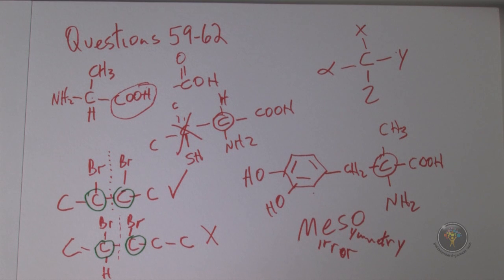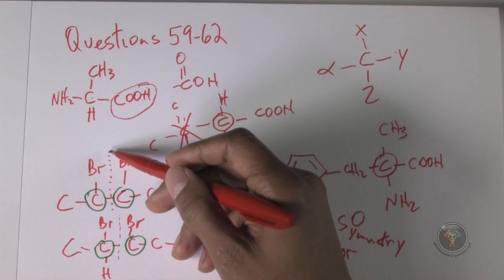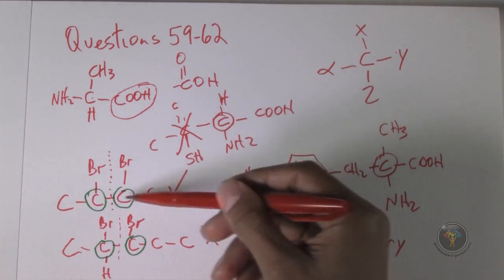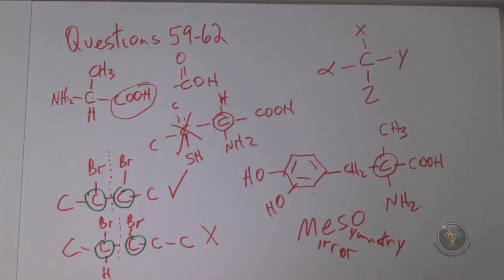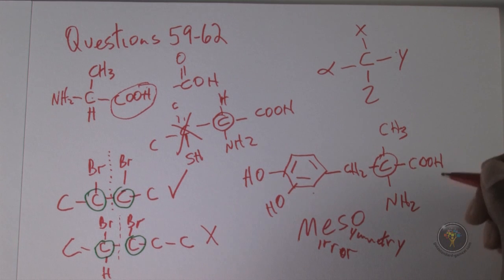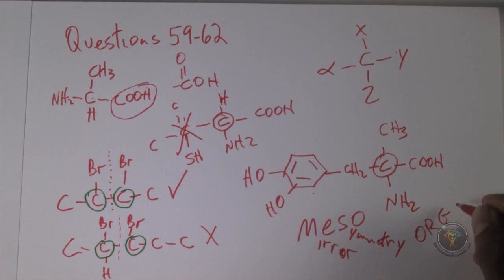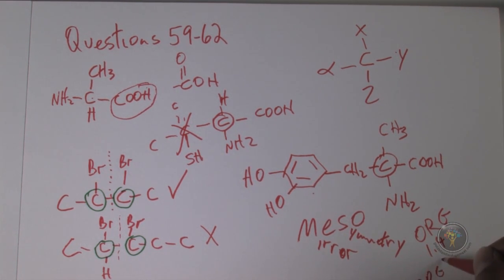Question 62: for a molecule to have a meso form, it must have a plane of symmetry perpendicular to the chain — here's the chain, here's the plane of symmetry — so that works. The answer to question 62 is C. For review, you can go to section ORG 1.4 for resonance structures and ORG 2.1 to 2.3 for stereochemistry, including meso compounds.